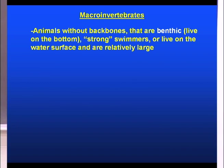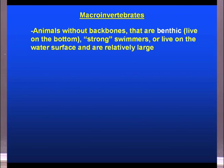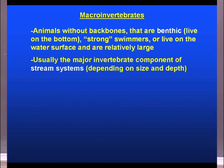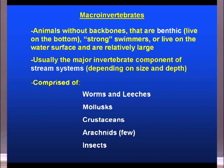Continuing with macroinvertebrates — these are animals generally without backbones. They can be benthic, meaning they live on the bottom, or they are strong swimmers, or maybe they live on the water surface. They're relatively large; these are things that we can see. Usually they are the major invertebrate component of stream systems. The macroinvertebrates are comprised of worms and leeches, mollusks, crustaceans, arachnids, and insects. Let me go through each one of these groups briefly to highlight what these organisms look like.